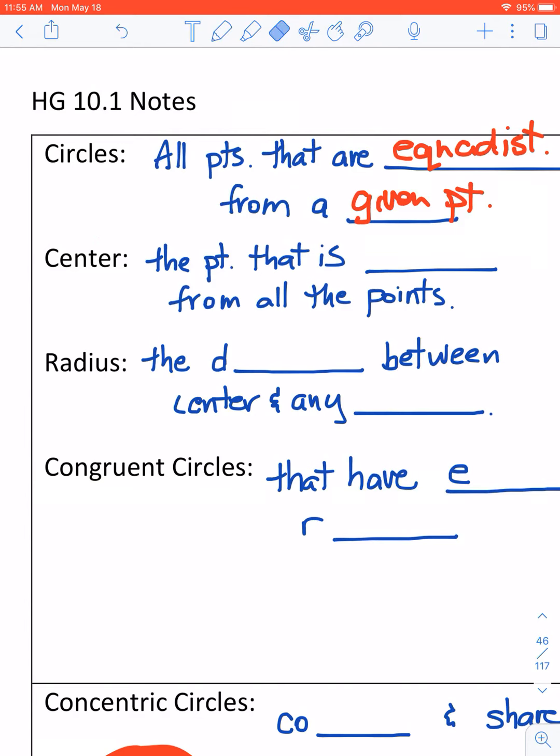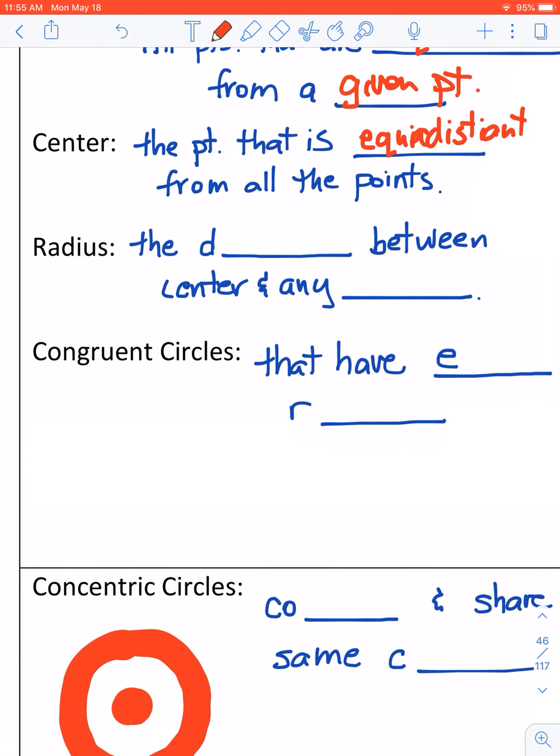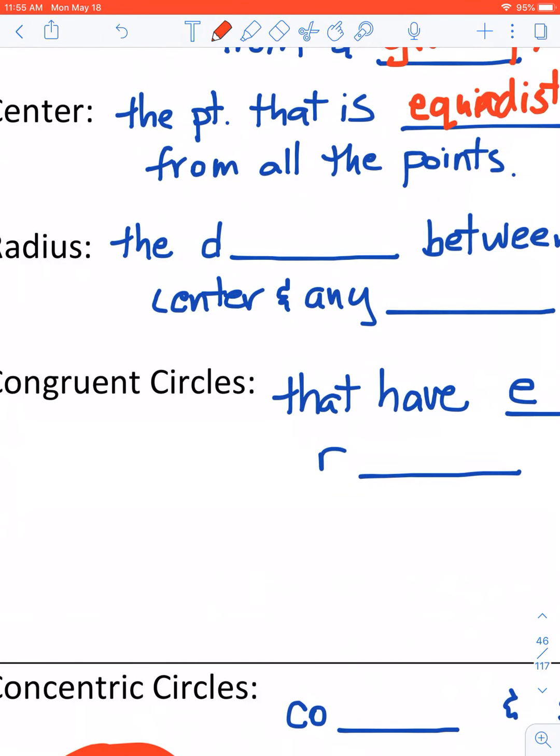Alright, what is the center? The center, the point that is equidistant from all the points. What is the radius? The radius is that distance, whatever it is, between the center and any point.